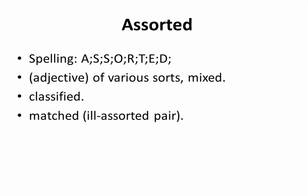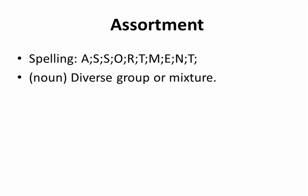Assorted. Spelling: A-S-S-O-R-T-E-D. Adjective. Of various sorts. Mixed. Classified. Matched — ill-assorted pair.